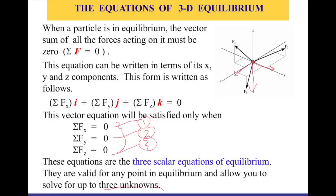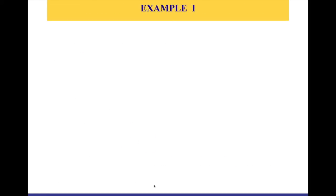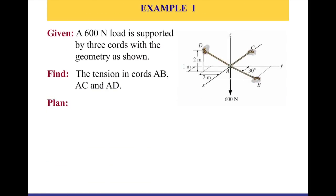This is what we're going to use and how we're going to apply it in a couple of examples to see how this works in finding unknowns in statics. So we have this system — a 600 Newton load supported by three chords with the geometry as shown in the image to the right. We are asked to find the tension in chord AB, AC, and AD. The point A is at equilibrium, and don't forget we also have the 600 Newton load pushing down on the negative Z-axis.